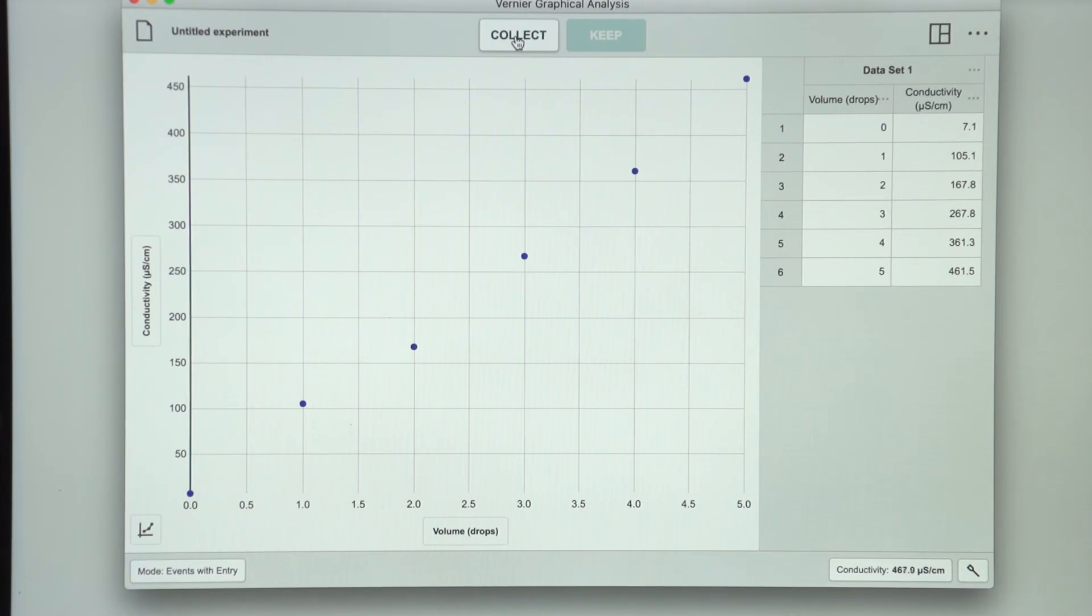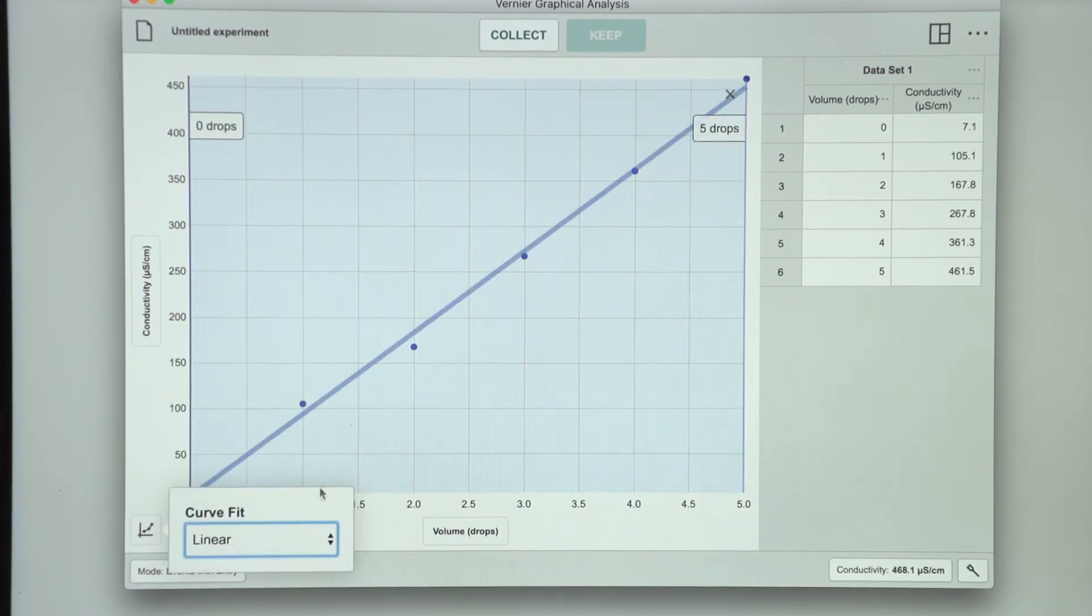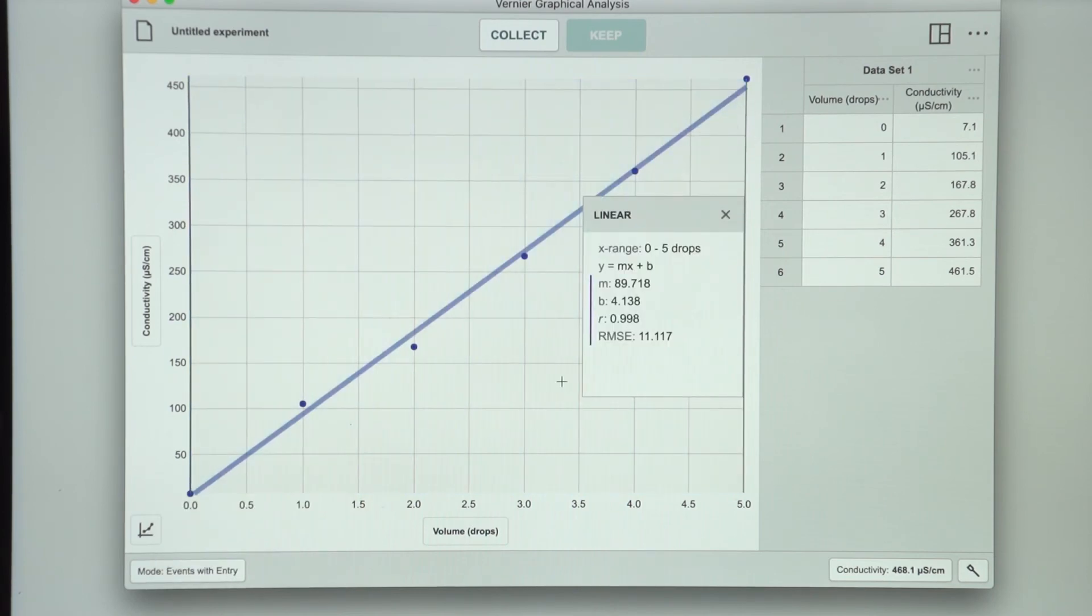Now I will analyze this data by clicking on the Graph Tools icon and selecting Apply Curve Fit. I would like the Linear Curve Fit, so I tap anywhere on the graph to display the parameters. And I want to record the slope of the line, which in this case is 89.7.